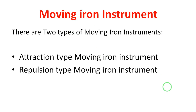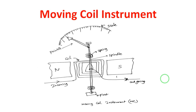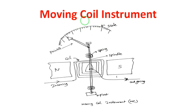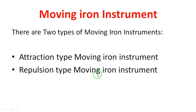The moving iron instrument works for both AC and DC. The difference between moving iron and moving coil: in a moving coil instrument, there is a coil that moves clockwise and anticlockwise. In a moving iron instrument, there is a piece of iron — a soft iron piece — that moves. That is the key difference.